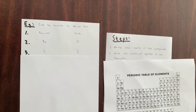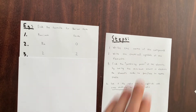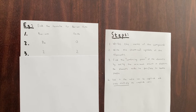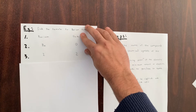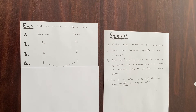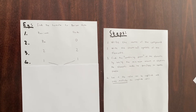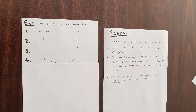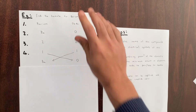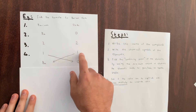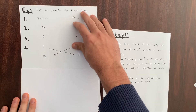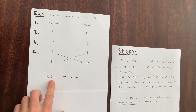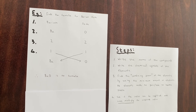Step four: the ratio is two to two. That can be simplified to one to one, because two and two are both factors of two. So we write down the two elements and cross multiply — the one goes to barium and the one goes to oxygen. Therefore the chemical formula for barium oxide is BaO. That covers all the steps you use when doing these types of problems.